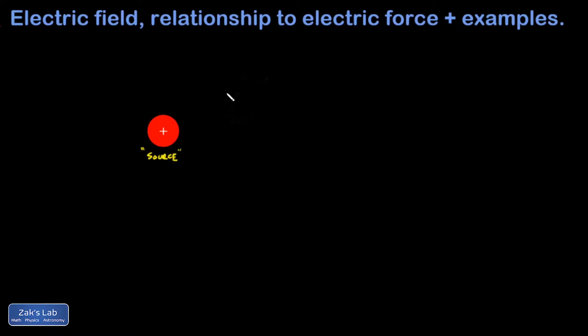But what if there isn't a test charge in the neighborhood of this source charge? Hopefully you agree that there should still be something going on around this source charge. And the idea is that the space around the source charge is filled with an electric field that would exert an electric force if we introduced a charge. The direction of that electric field is given by the direction the force would point on a positive test charge.